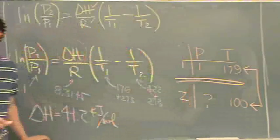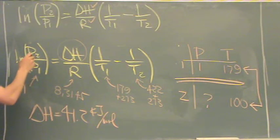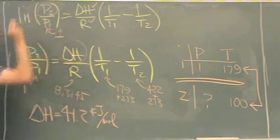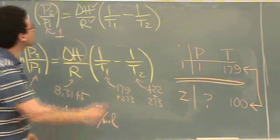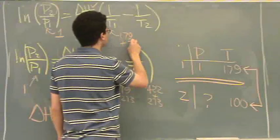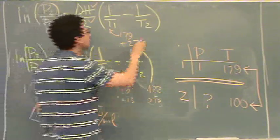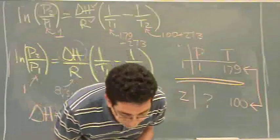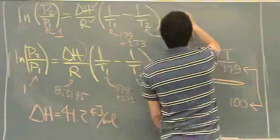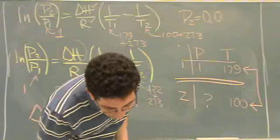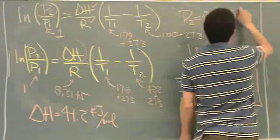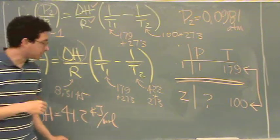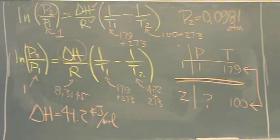I'll call this point two, just for ease. So, now, there's a one and a two. P2. This is the one. This is what we don't know. P2. P1. That's one. Now, just following from the table. T1, 179. Again, you're doing division, so you've got to add 273. And then, T2 is 100. You're doing division, so you've got to add 273. So, your book got 0.0981. Make sure you can use your calculator to do this. That's going to be a difficult part on the exam for most students.